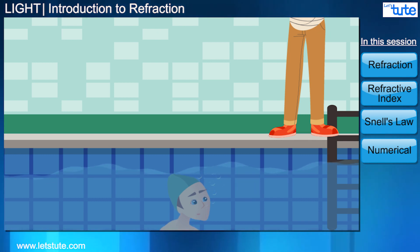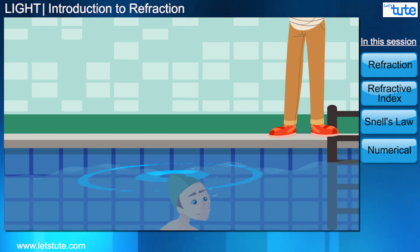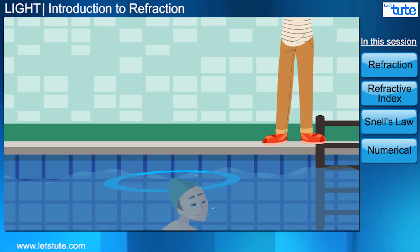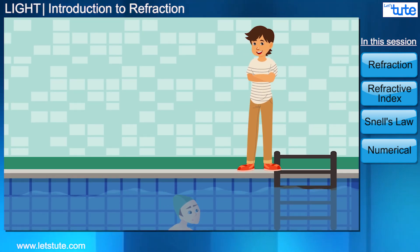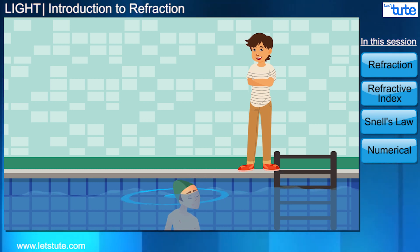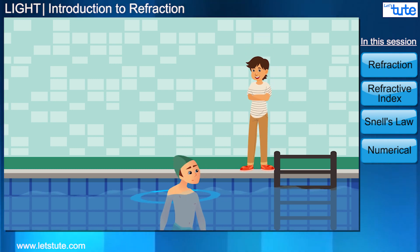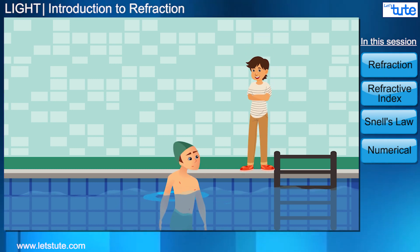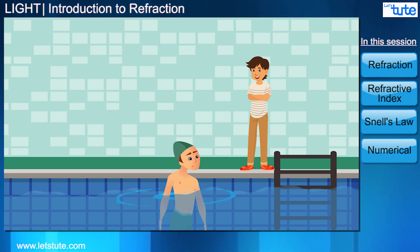You realized your friend suddenly looks taller. When you look at them from above the water, their height looks normal, but from under the water they look taller. What is happening here?